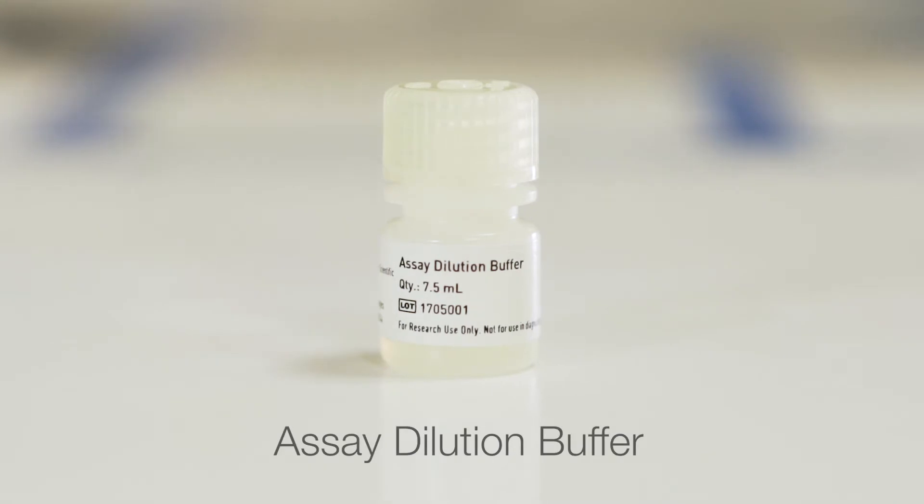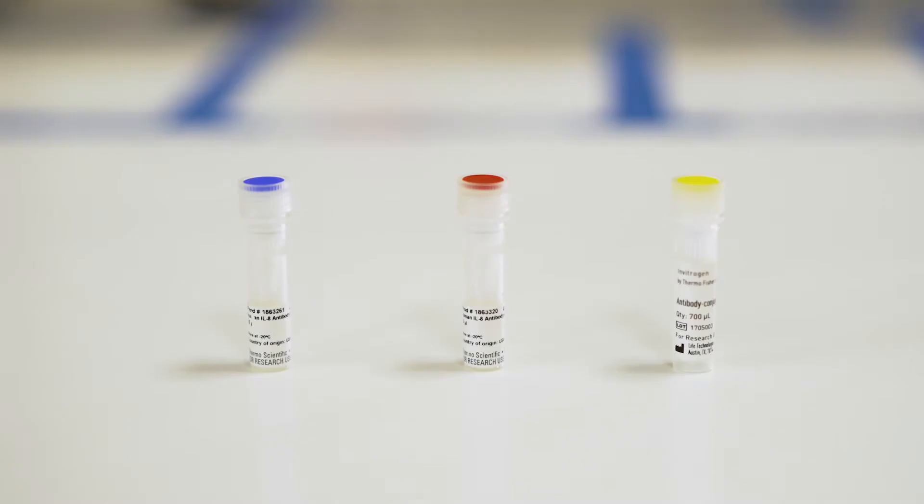The first bottle is the assay dilution buffer used to dilute standards and samples. The three tubes with the blue, red, and yellow caps are antibody conjugate A, antibody conjugate B, and a dilution buffer that will need to be mixed.